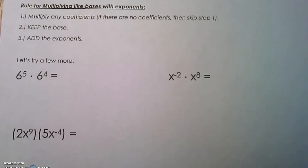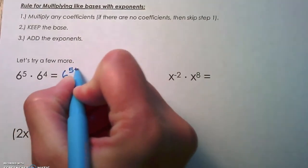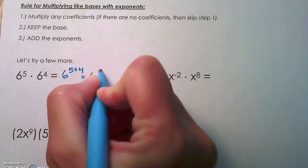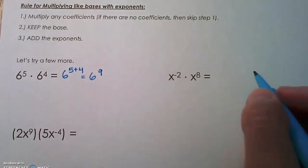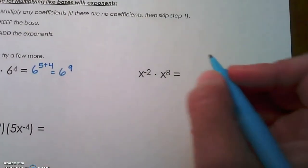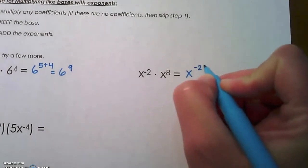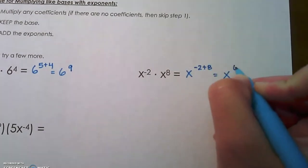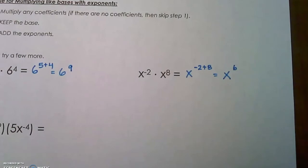6 to the 5th times 6 to the 4th is going to be 6 to the 5 plus 4, which is 6 to the 9th. X to the negative 2 times x to the 8th is x to the negative 2 plus 8, which is x to the 6th. Keep your signs on those exponents, guys.